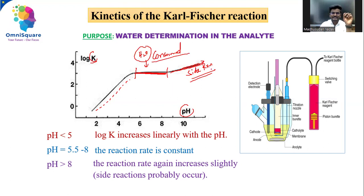This is how a Karl-Fischer titration curve looks. At pH less than 5, K increases linearly with increasing pH. Between 5.5 to 8, the reaction rate is constant.